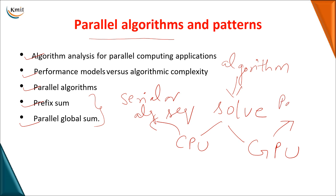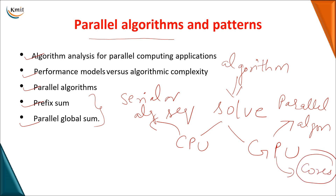Whereas when we write the same solution to a problem on a GPU, we call that a parallel algorithm, because on a GPU there are multiple cores executing your problem and providing a solution. So a parallel algorithm is nothing but a step-by-step procedure written for multiple cores.